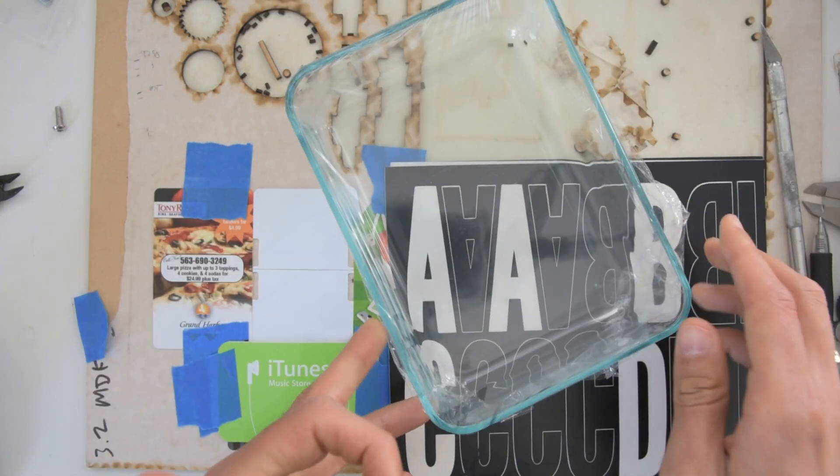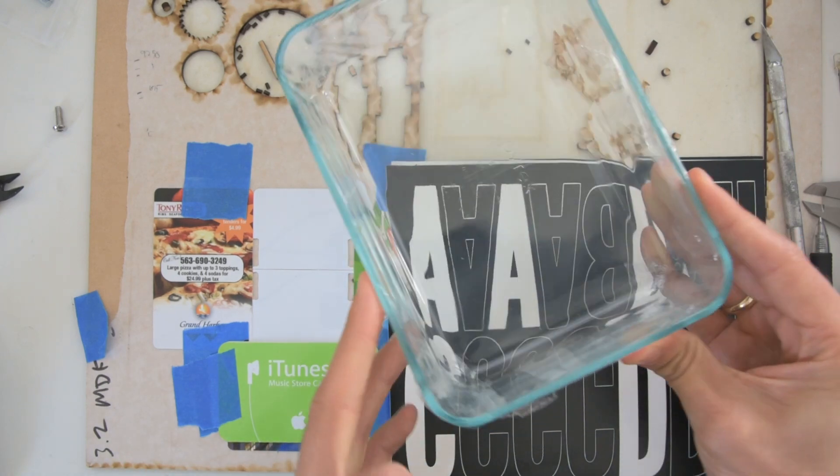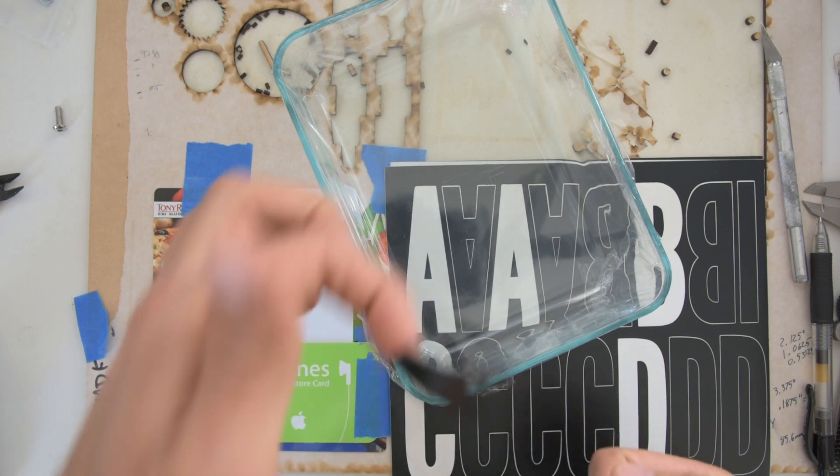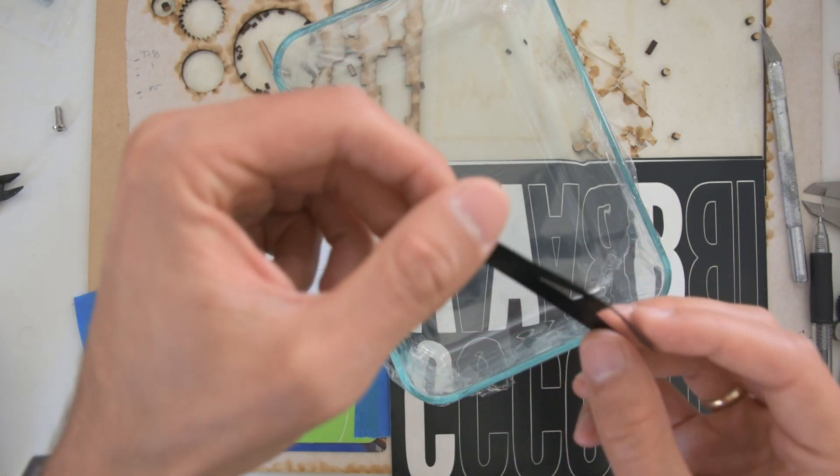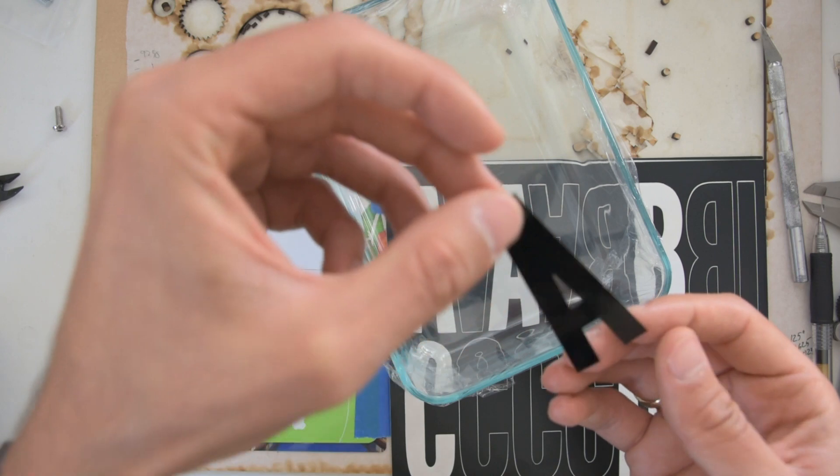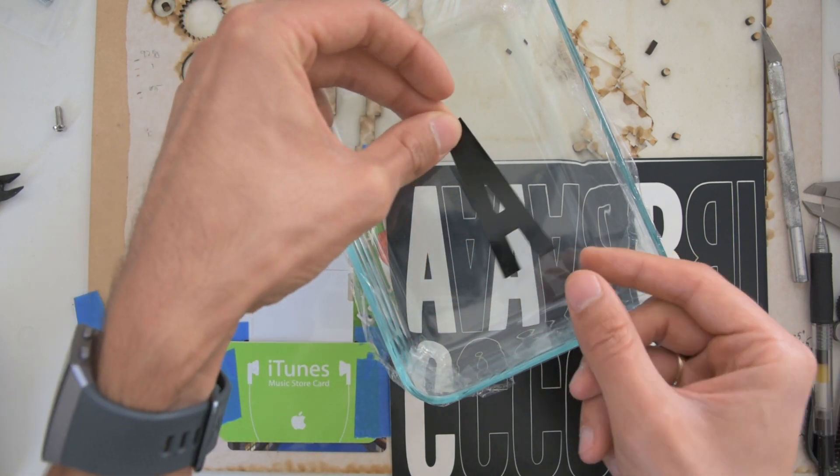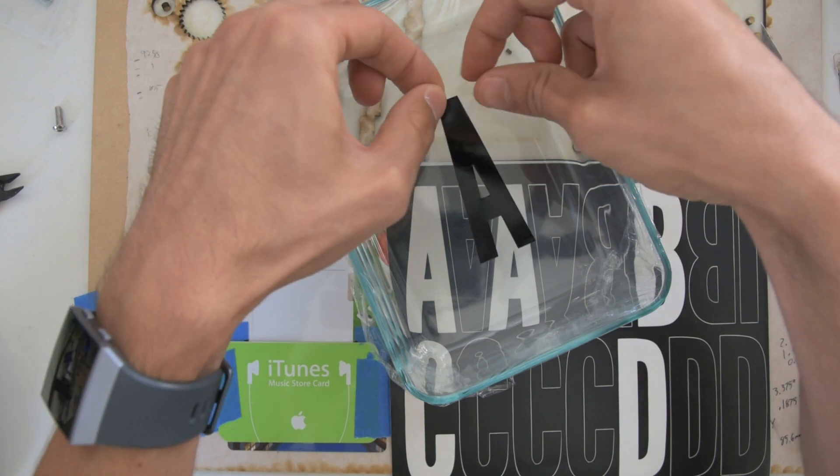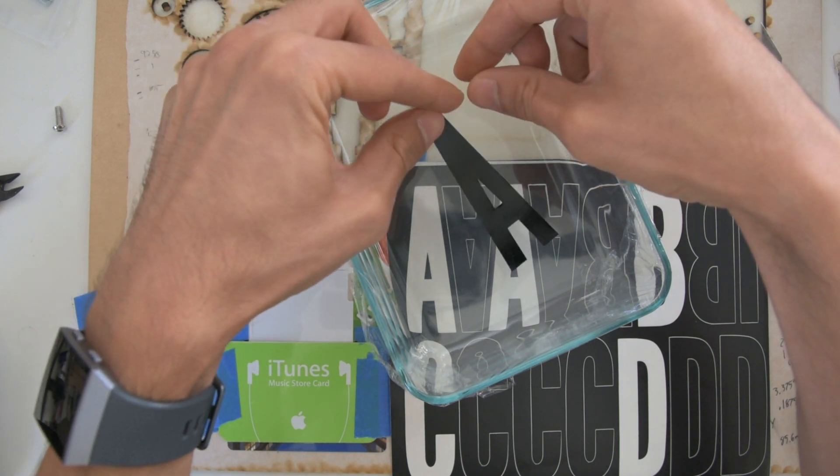And so we can just peel that off. And then we're going to take our container with the plastic wrap on the top side here. And we're going to take the sticker, this letter A here, and we're going to actually flip it over so that the sticky side is up. And we're going to lay that down on our plastic wrap. And we can actually just flip this whole thing over.